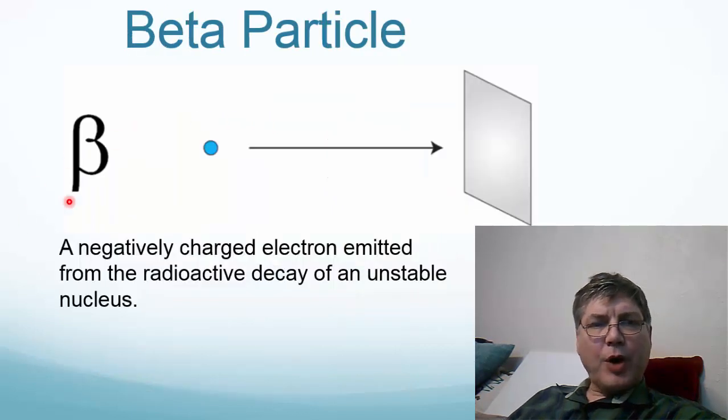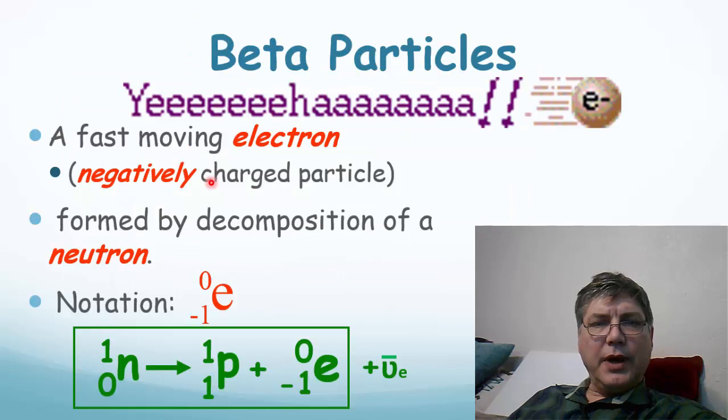The next type of particle is a beta particle, represented by the second letter in the Greek alphabet, the letter beta. A beta particle is just an electron. However, it's a very special electron because it doesn't come from the energy levels or the electron cloud. It comes from the nucleus of an atom where electrons shouldn't be. It comes, basically, from the decomposition of a neutron.